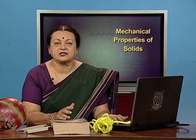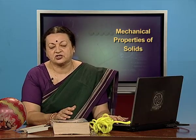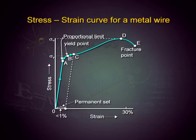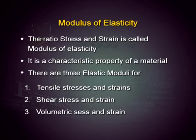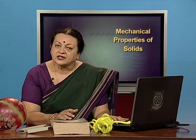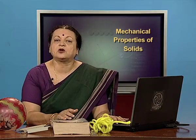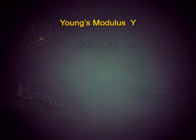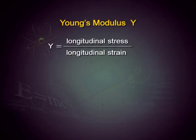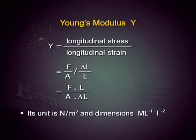Now we are going to look at the ratio of stress and strain, which according to Hooke's law should be related. We did a graph for that in our previous episode, and we are going to now describe the modulus of elasticity. Tensile modulus of elasticity is called Young's modulus, and it is measured as the ratio between longitudinal stress and longitudinal strain: F/A divided by ΔL/L. It has a unit of Newton per meter square and its dimensional formula is ML⁻¹T⁻².